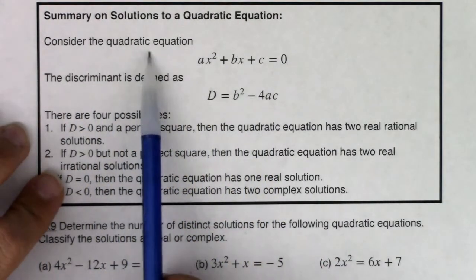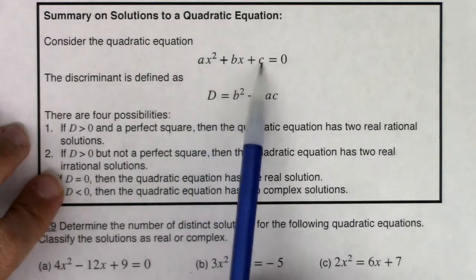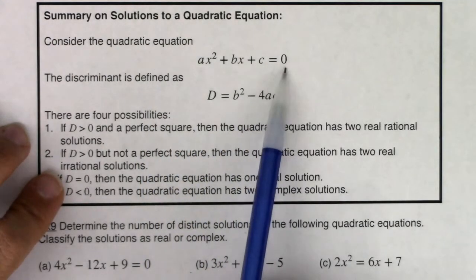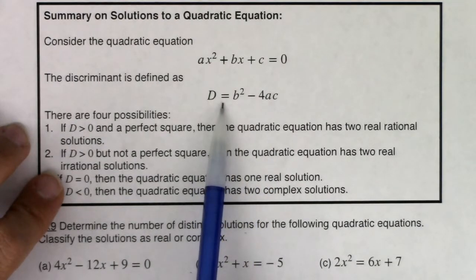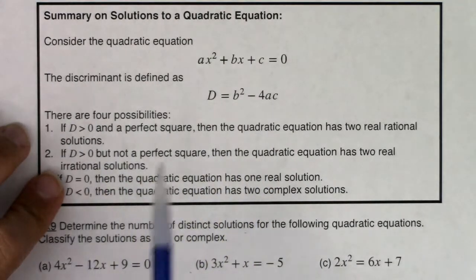If we have our quadratic equation in standard form set equal to 0, and we define our discriminant as b² minus 4ac, we're going to wind up with four possibilities.